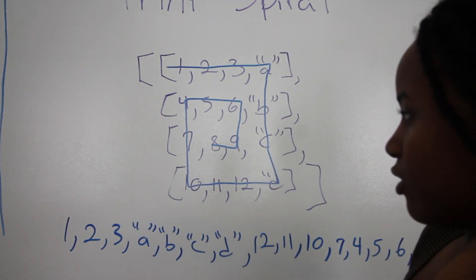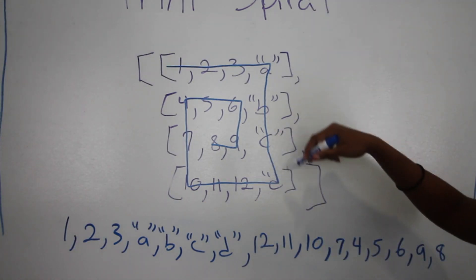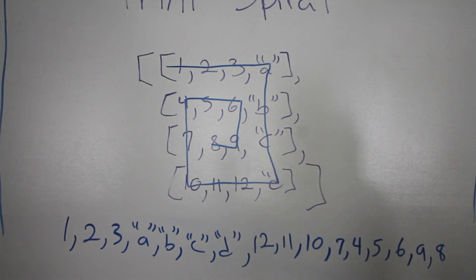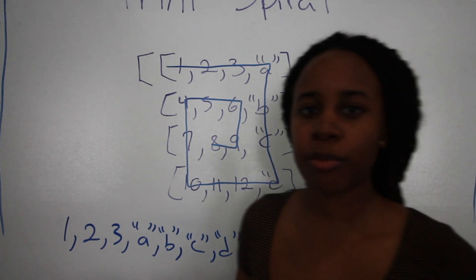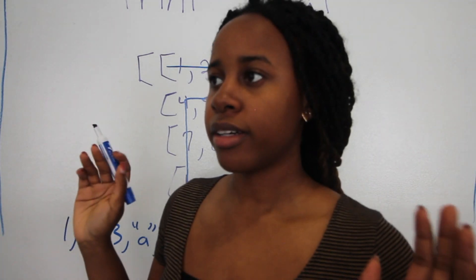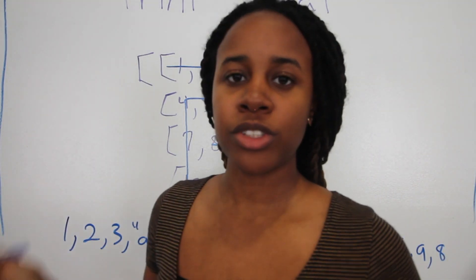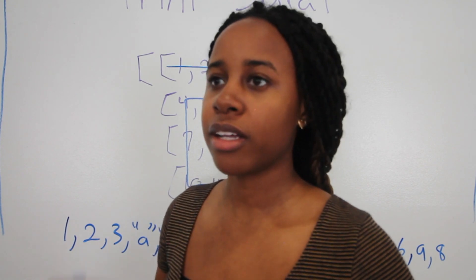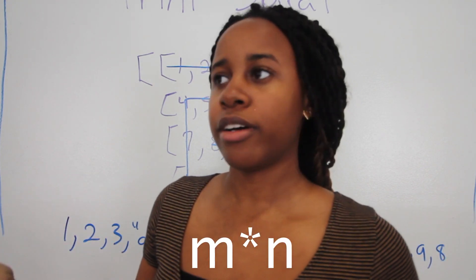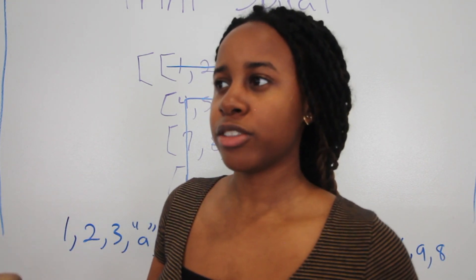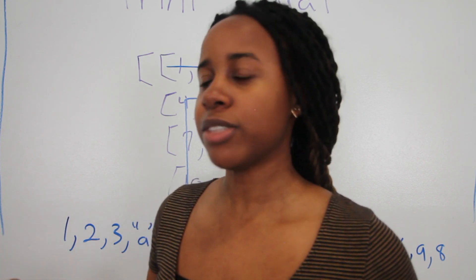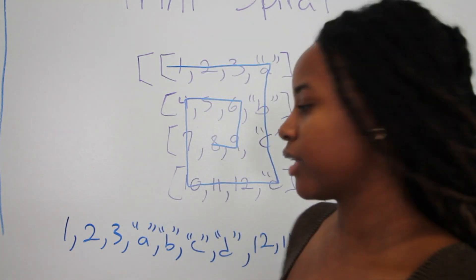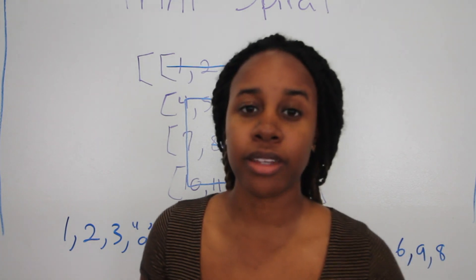Hopefully you guys understand this. I put these strings here so that they're more readable, not just numbers. Also, it doesn't matter if we're using n by n — the same amount of rows and columns — or n by m, where there's more columns than rows, or vice versa. It will still work. Let's get started with the Python implementation.